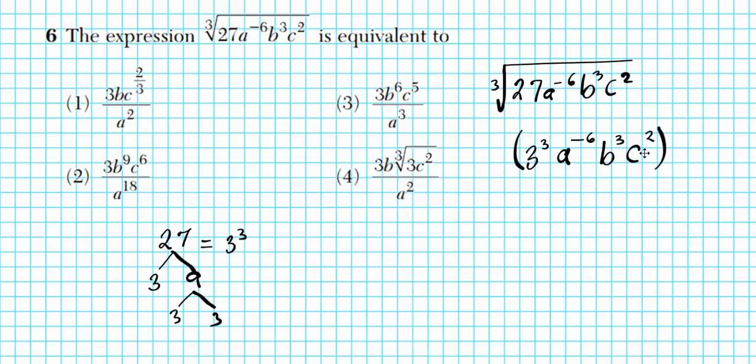Now using the nth root property of exponents, the third root can be written as the one-third power. Now check this out. I'm now going to use the power of a power property of exponents. That requires me to distribute this power to every single power in my parenthesis. You're going to be actually multiplying the powers. So let's go ahead and do that here. So I'm going to have 3 raised to the 3 times one-third, a raised to the negative 6 times one-third, b raised to the 3 times one-third, c raised to the 2 times one-third. That's the beauty of expressing each and every term. So you can just have the exponents interact with each other and you don't have to even look at the basis.